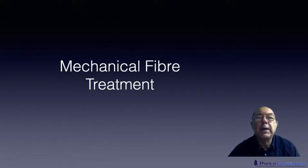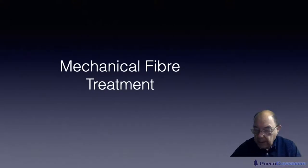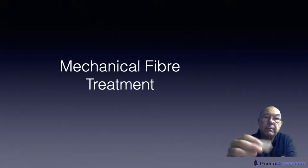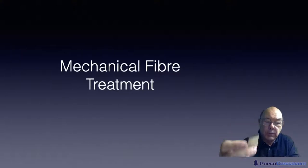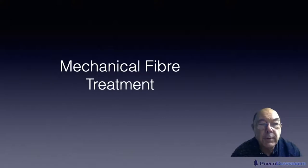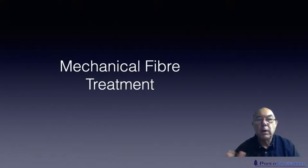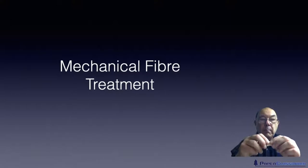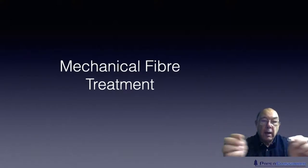There are actually two types of mechanical fibre treatment, so don't get confused. One type is where we take lumps of tree material like this, where they've chopped down a tree into wood chips and you feed that through a single disc refiner, which will release the fibres into individual fibres.